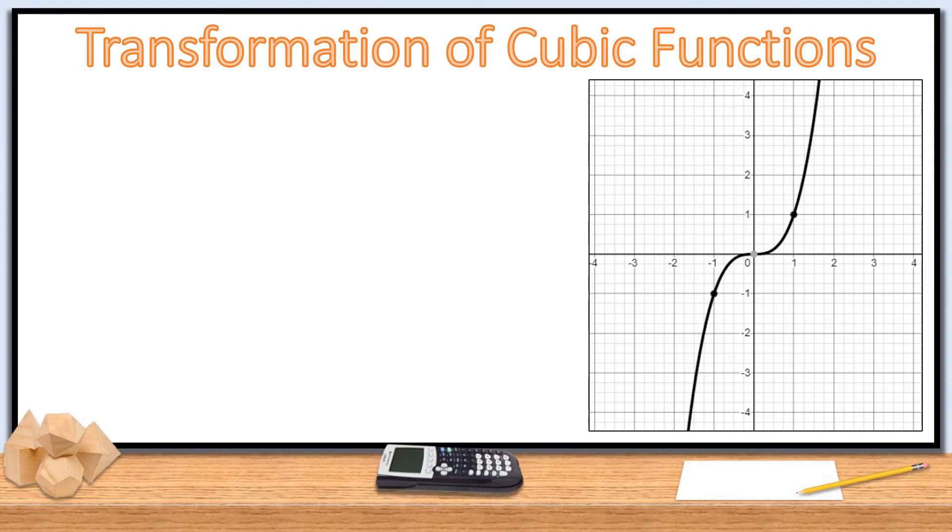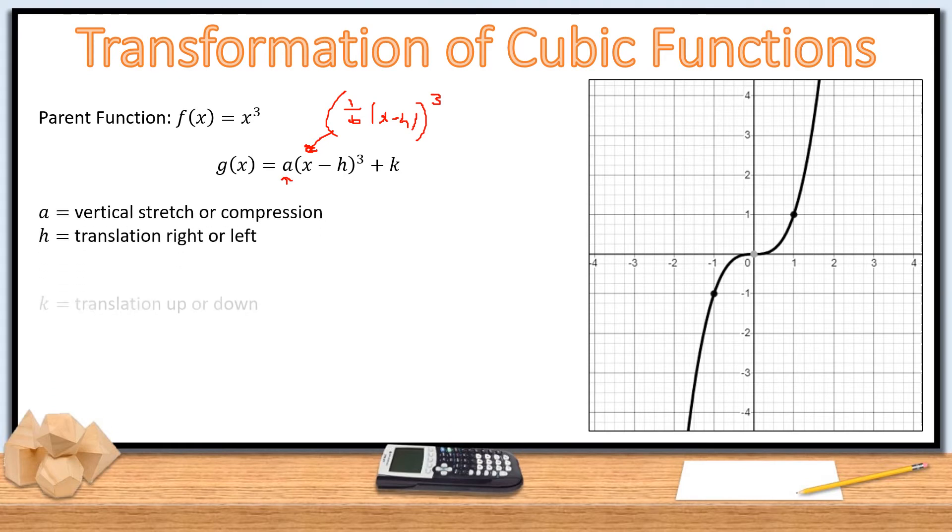All right, so transformations. There's not really anything new here. You've got your parent function is x cubed. The transform function, we've got the a, h, and k values. Sometimes there will be a b. For the most part in this part of Algebra 2, we are ignoring the b value, but remember it's 1 over b, x minus h to be cubed. So there is a b value that can be there, but it's hard to tell the difference between a vertical stretch and a horizontal compression. So we just typically will stick to the a value. So a is vertical stretch compression, h is translation, and so is k. So nothing different from quadratics. Your job is going to be to identify transformations and then write equations given certain transformations.